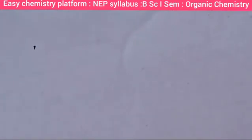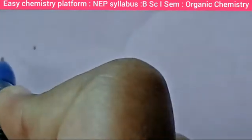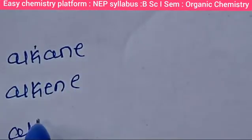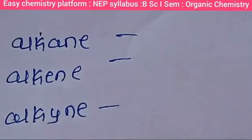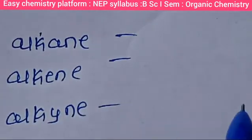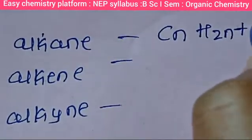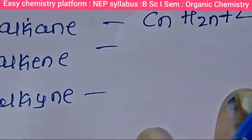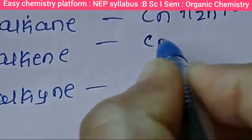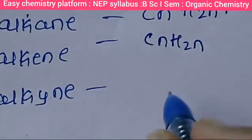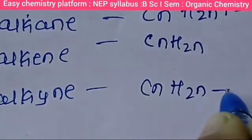You must know three important things: the formula for each type. Alkanes have the formula CnH2n+2, alkenes have the formula CnH2n, and alkynes have the formula CnH2n−2.